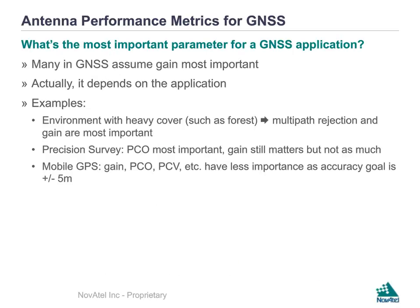One question we often get asked is: what is the most important antenna parameter for a GNSS application? Many in the GNSS world assume that gain is the most important metric, but it actually depends on the application. In an environment with heavy cover such as a forest, multipath rejection and gain become really important. For a precision survey application, PCO is the most important, while gain still matters but is less critical. For a mobile GPS application, metrics such as gain, PCO, and PCV tend to be less important, as you typically have an accuracy goal of plus or minus 5 meters.